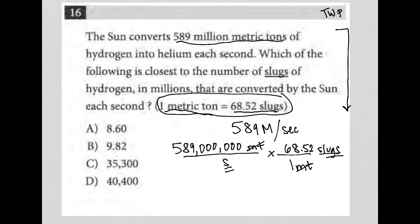Let's do some math here. The metric tons cross out, so really all I'm doing is multiplying this 589 million times 68.52. Our answer, don't forget, will be in millions. Let's do the math here. I'm going to pull out my calculator and say 589,000,000 times 68.52.